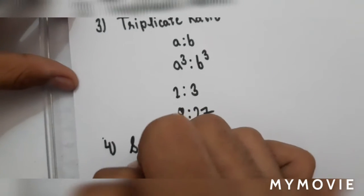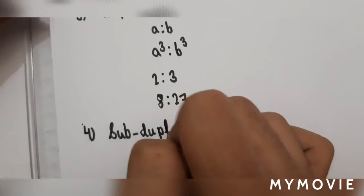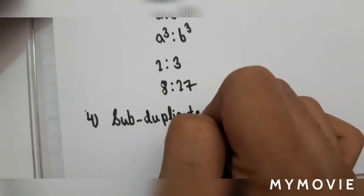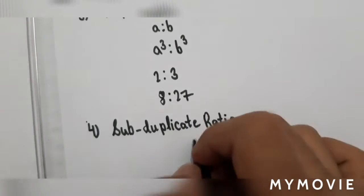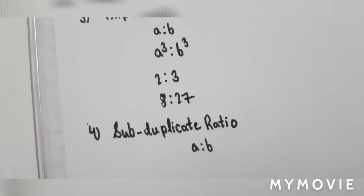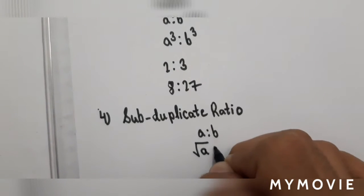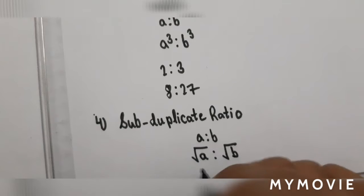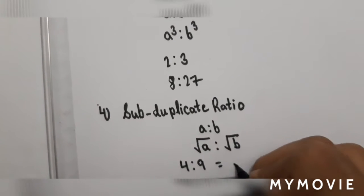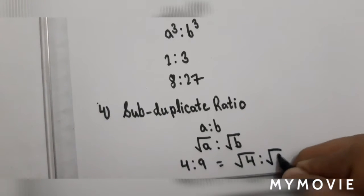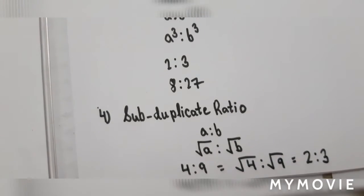Next comes subduplicate ratio. In subduplicate ratio, if you are provided A:B, you should find the square root of A and B, giving √A : √B. For example, if you are provided 4:9, then √4 : √9 = 2:3. You will get the answer as 2:3.